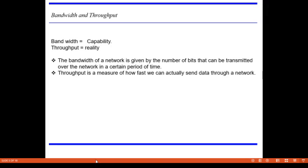Now we will differentiate bandwidth and throughput. Bandwidth is a capability and throughput is a reality. For example, imagine a highway that can allow 1000 cars per minute. But due to congestion in traffic, it can allow only 100 cars per minute. The actual capacity — 1000 cars per minute — is the bandwidth, while the reality of only 100 cars per minute is the throughput.